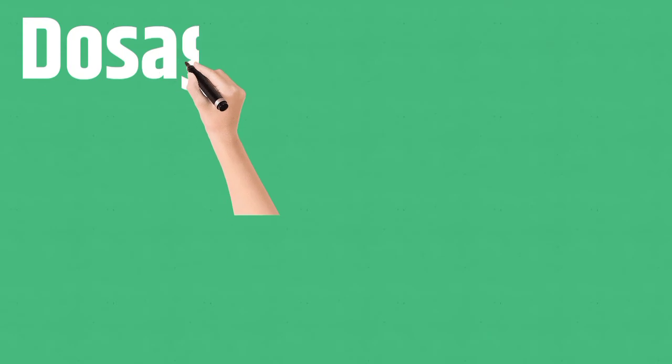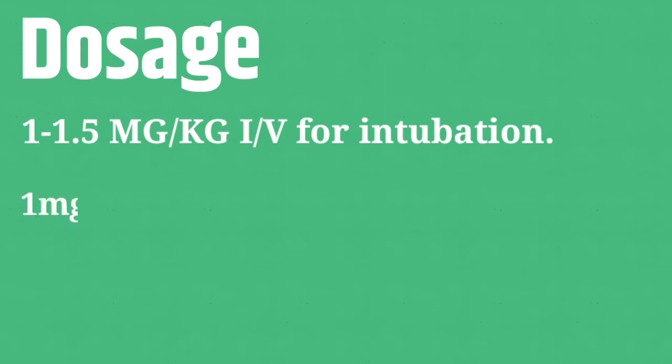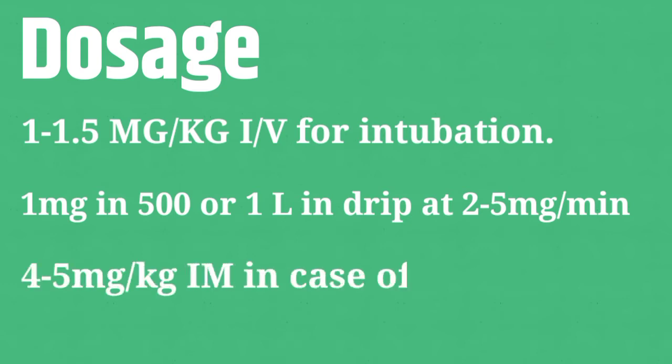Dosage: 1 to 1.5 mg per kg IV for intubation. As an IV drip, 1 mg in 500 or 1,000 milliliters administered at 2 to 5 mg per minute. In children, the dose is 4 to 5 mg per kg IV.